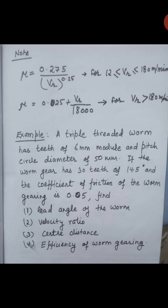Now we will solve a numerical problem, which is very important from a GATE point of view. A triple-threaded worm has teeth of 6 mm module and a pitch circle diameter of 50 mm. The worm gear has 30 teeth with a 14.5 degree normal pressure angle, and the coefficient of friction is 0.05. Find: the lead angle of the worm, velocity ratio, center distance, and efficiency of the worm gearing system.